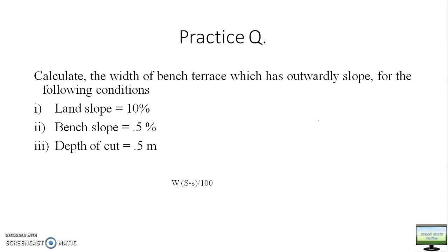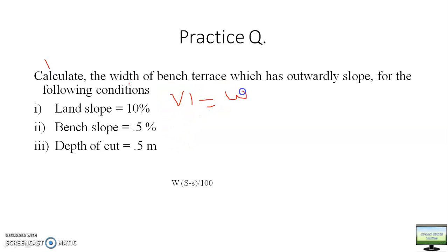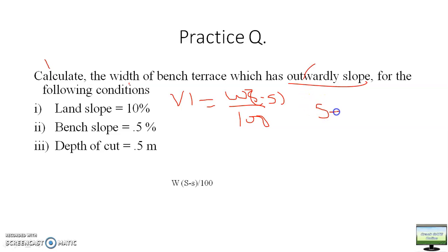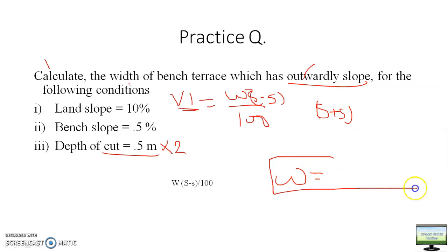This practice question asks about the width. Land slope, bench slope, and depth of cut are all given. Vertical interval equals WS divided by 100. For outward sloping you subtract S, giving 100 minus S; for inward sloping you add S, giving 100 plus S. The value of VI for half raised to 1 is depth of cut multiplied by 2. From this, calculate W and share your answer in the comment section.